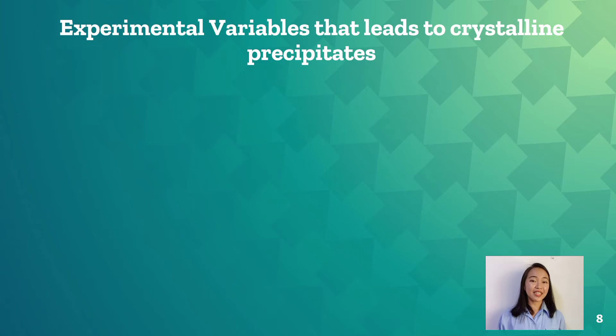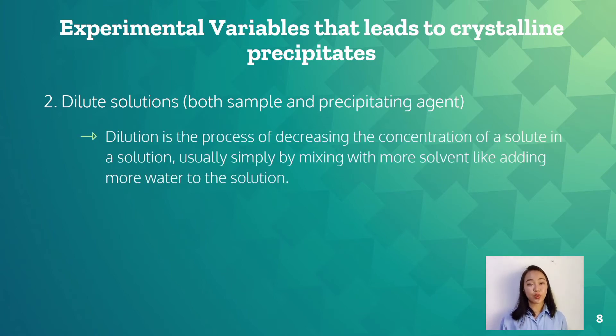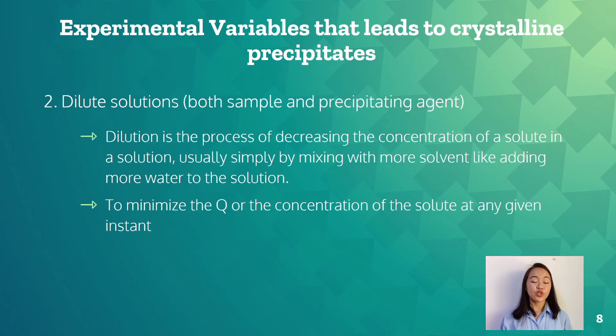The second type of way is diluting the solutions, both the sample and the precipitating agent again. Dilution is the process of decreasing the concentration of a solute in a solution, usually simply by mixing with more solvent like adding more water to the solution. To dilute such a solution means adding more solvent without the addition of more solute. To minimize the Q or the concentration of the solute at any given instant.